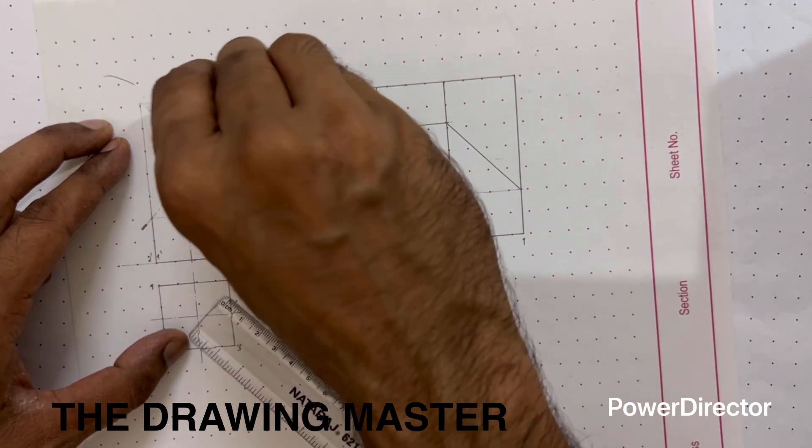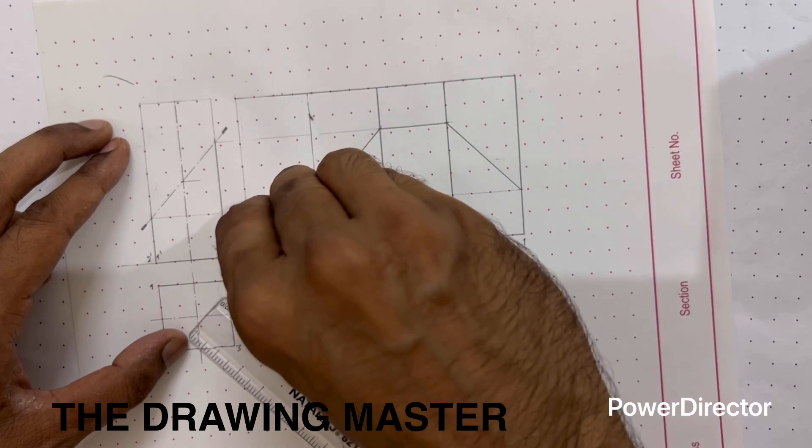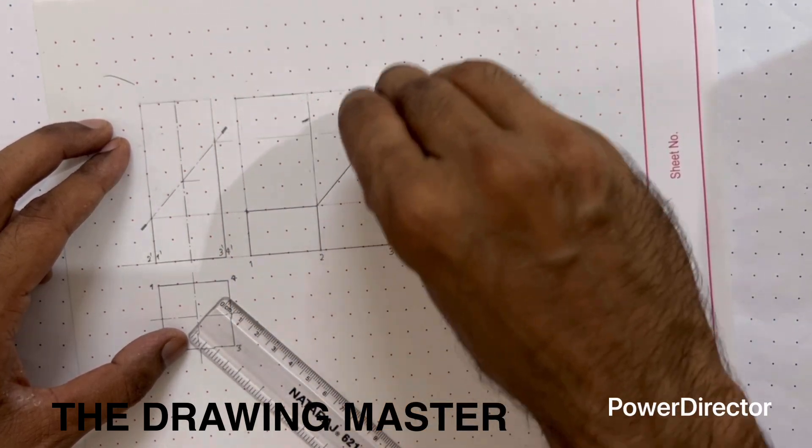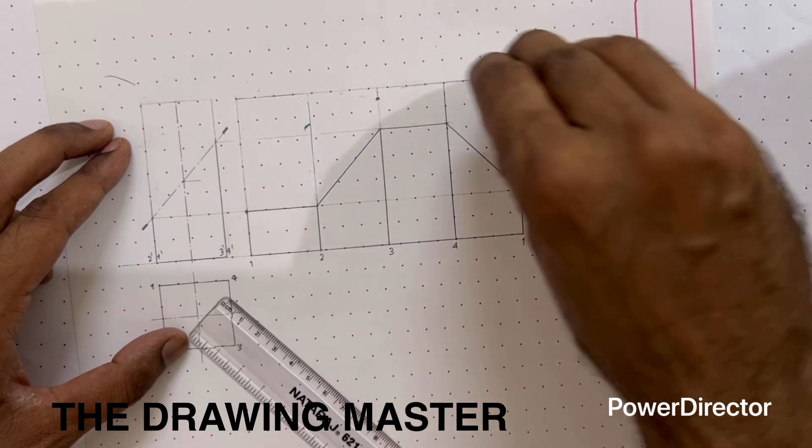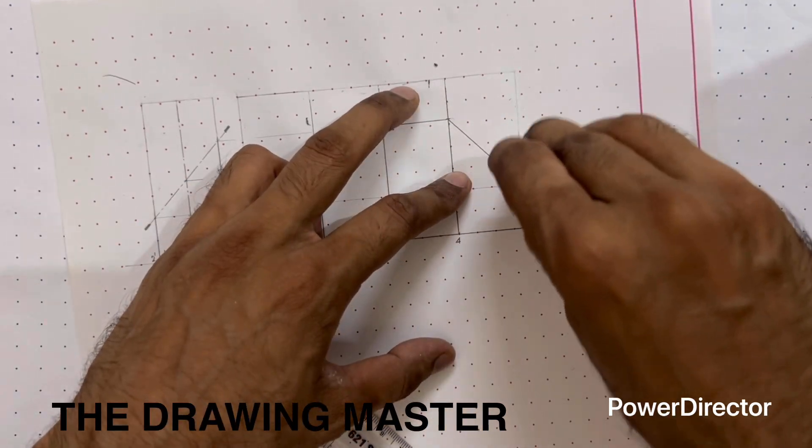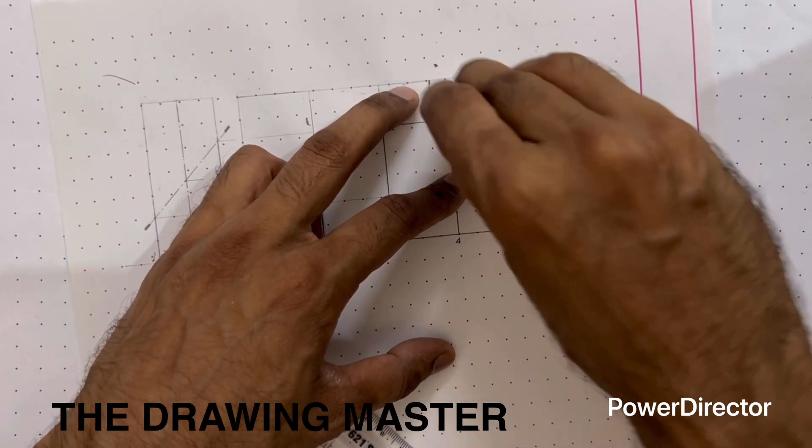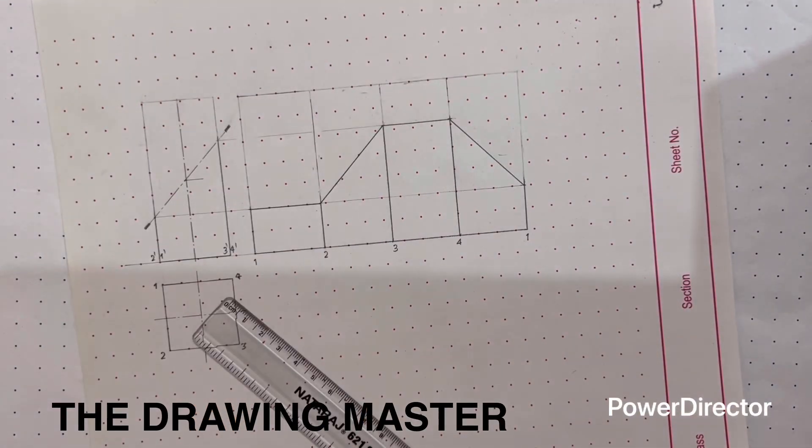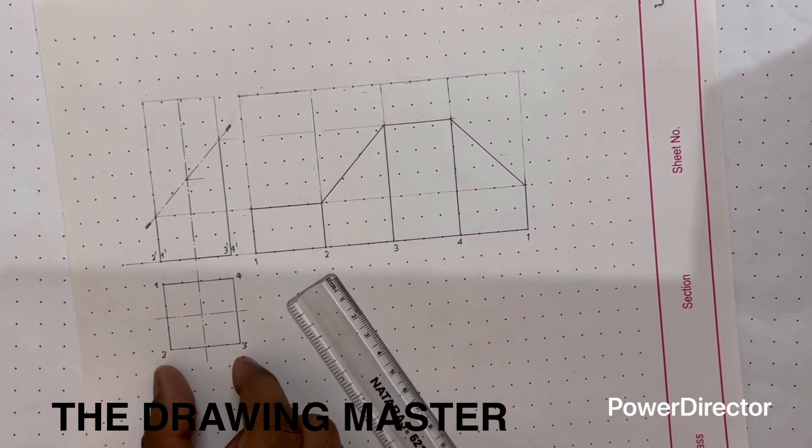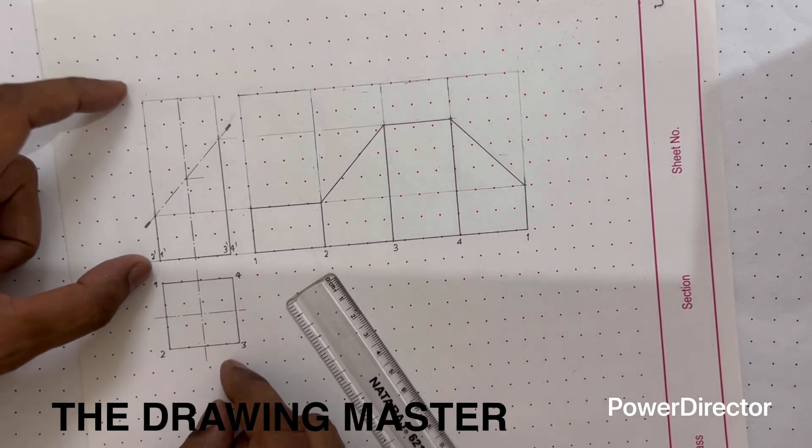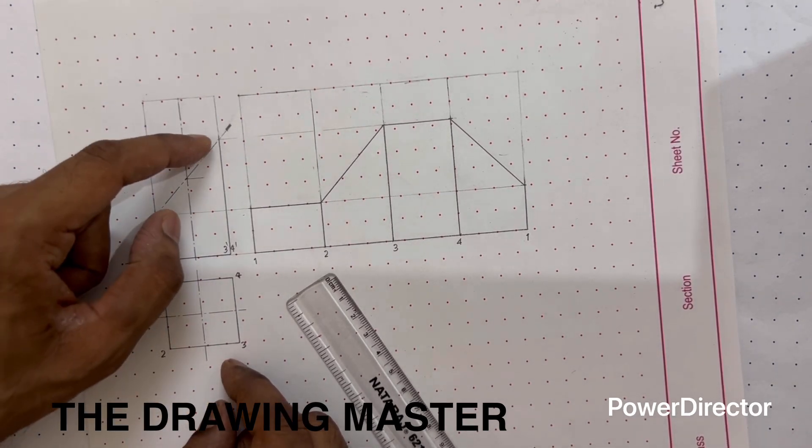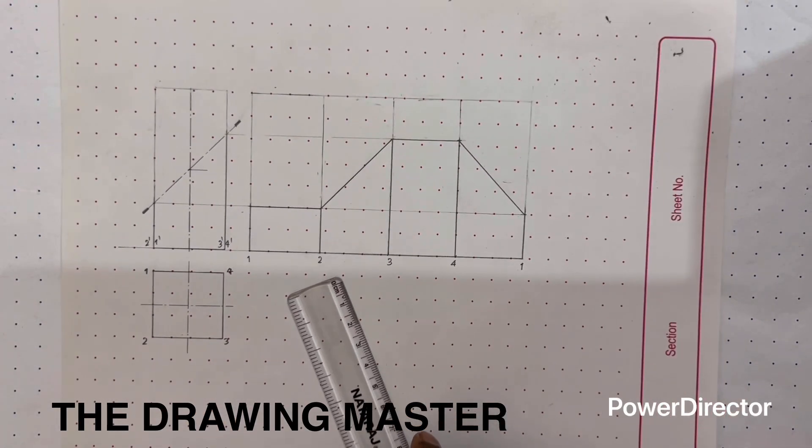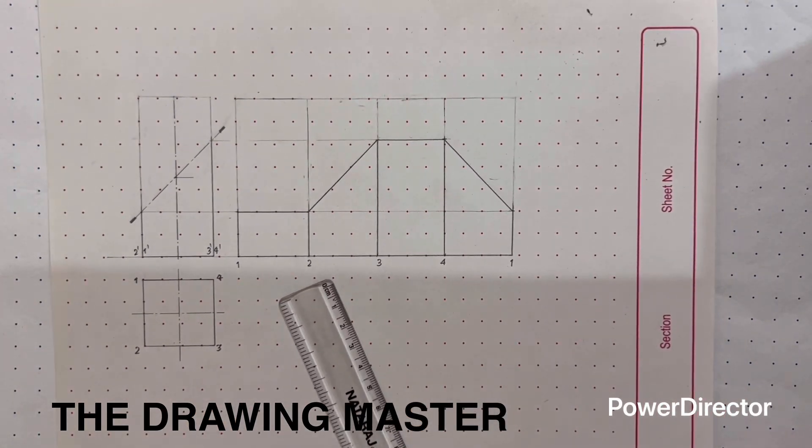One part is left, that is dimensioning, so dimensioning is your call. I have already uploaded one video on the dimensioning. Like what is chain method, what is parallel method, what is dimensioning style. So you can refer to that. Very simple dimensioning is there. Here you have to write the base edge 30. Take two extension lines, base edge 30. Here you have to write height. Here you have to write the angle. And here you can write the length of the sheet. So this is the developed surface of the square base prism.